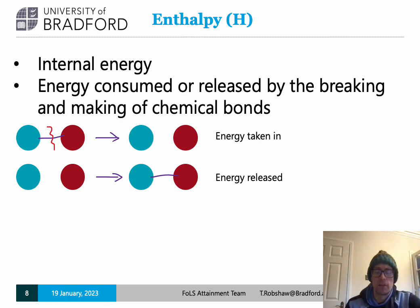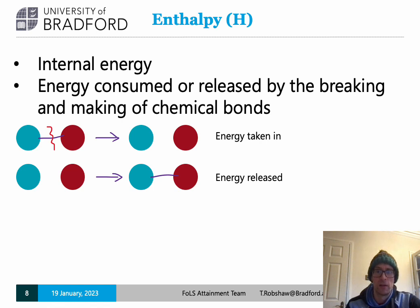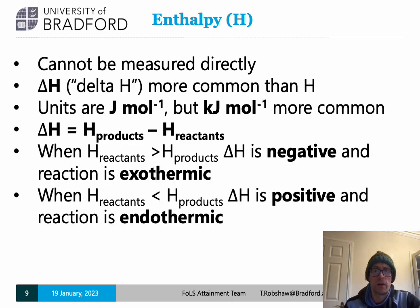Enthalpy is sometimes inaccurately just called heat energy. More precisely, enthalpy is internal energy — the energy consumed or released by the forming and breaking of chemical bonds. For a bond to break, the chemical needs to take in energy from its surroundings, and for a bond to form, the chemicals release energy to their surroundings. It isn't actually possible to measure directly the enthalpy of a substance, so we measure an enthalpy change, delta H, as a chemical converts to another species.